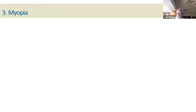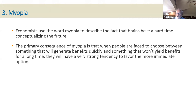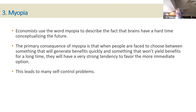Myopia — and we're not talking about eyesight here. Economists use the word myopia to describe the fact that the brain has a hard time conceptualizing the future. We don't make good decisions about the future. When people are faced with choosing between something that will generate benefits quickly and something that won't yield benefits for a long time, they have a very strong tendency to favor the more immediate option. Traditional economics thought people were very good planners — we are awful planners. We tend to respond to immediate gratification rather than something that takes longer.